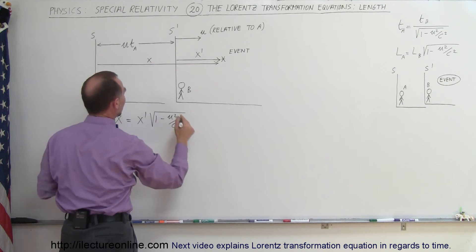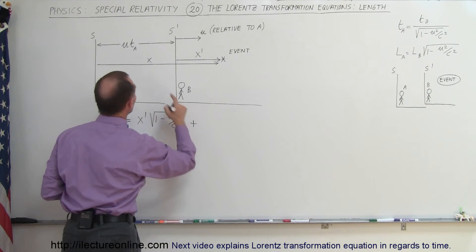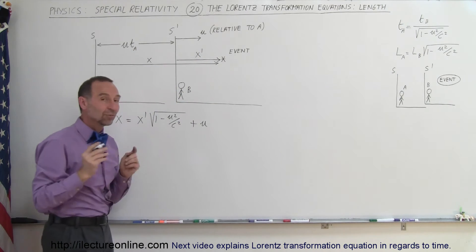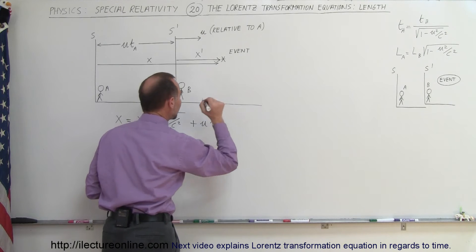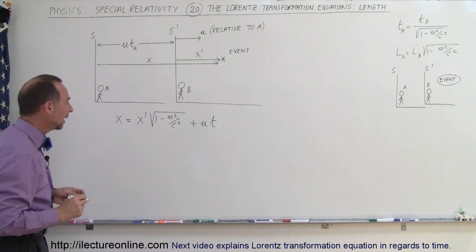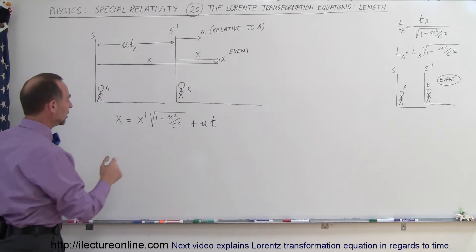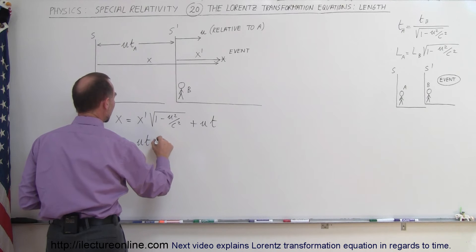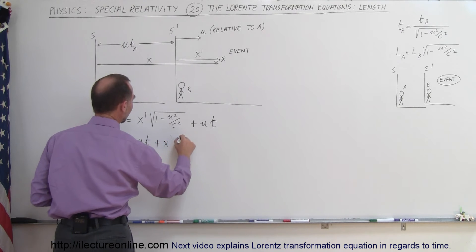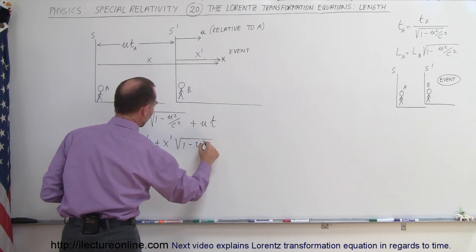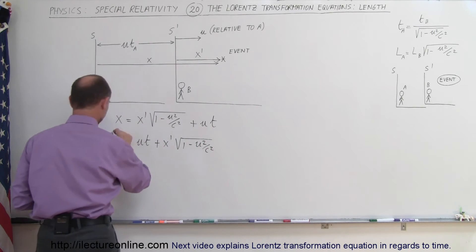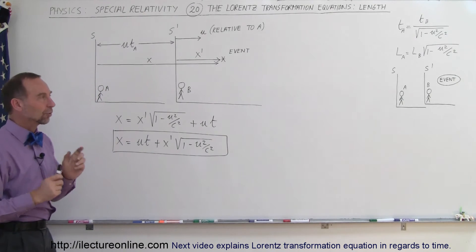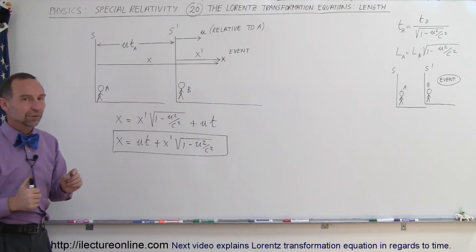We multiply by the square root of 1 minus U² over C², and then add the length contributed by the moving frame's displacement, which is the velocity U of the moving reference frame S' times the time T as measured by A. Rearranging, X equals U times T plus X' times the square root of 1 minus U² over C². This is the Lorentz transformation equation in the X direction, which is the direction of travel of the moving reference frame.